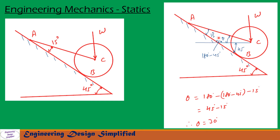The angle between these two lines will be 180 minus 45 degrees. Let us call this angle theta. Using the fact that the sum of angles in a triangle equals 180 degrees, we can calculate theta. Theta equals 180 minus (180 minus 45) minus 15 degrees, so theta equals 30 degrees.